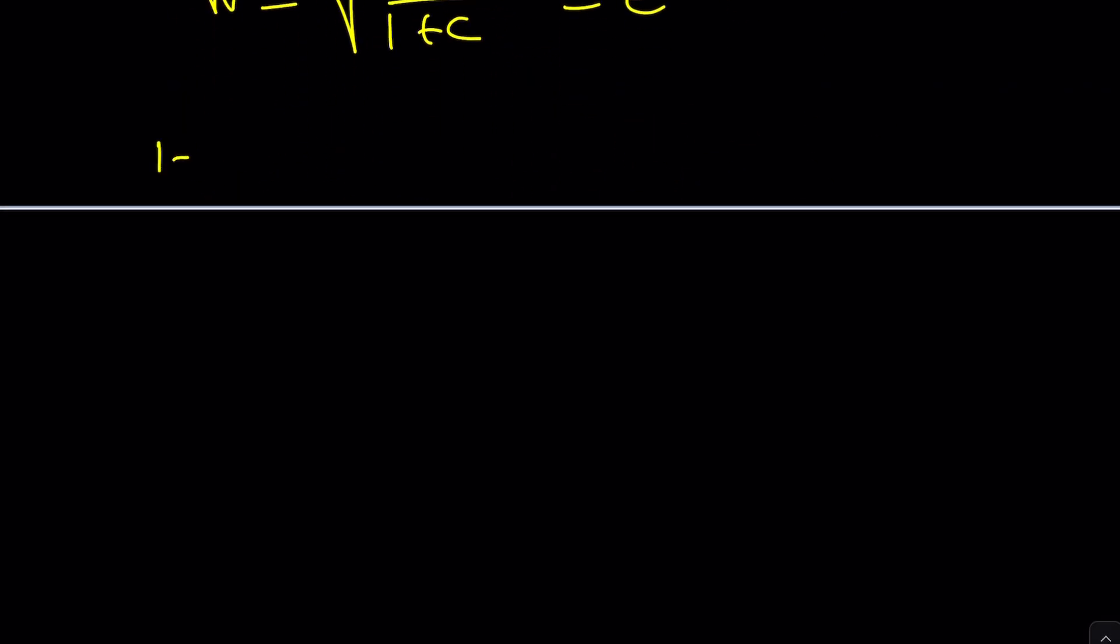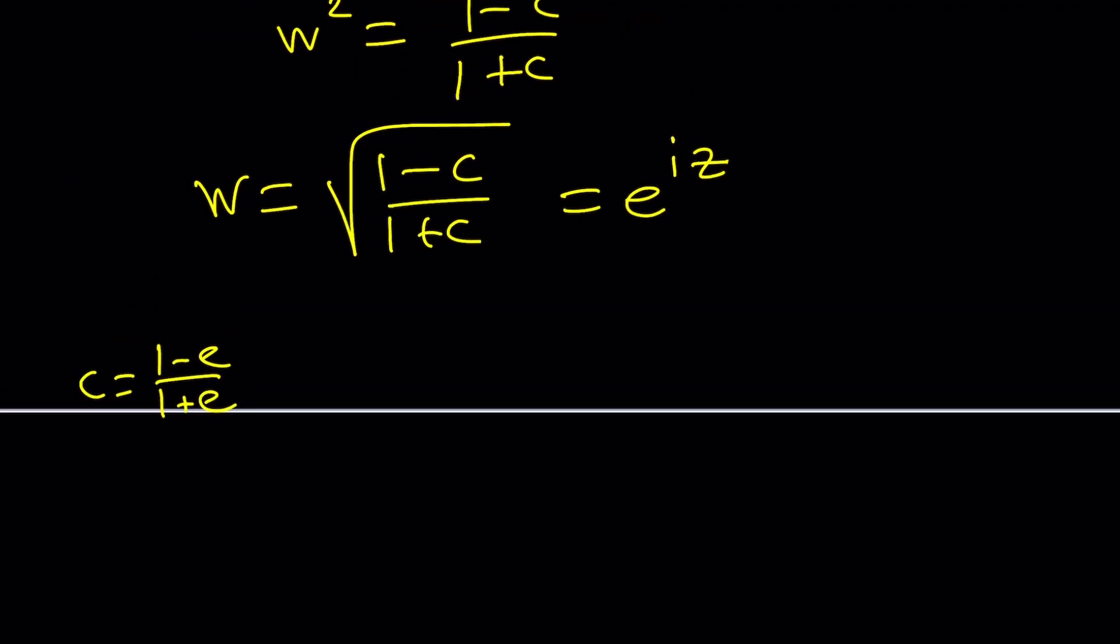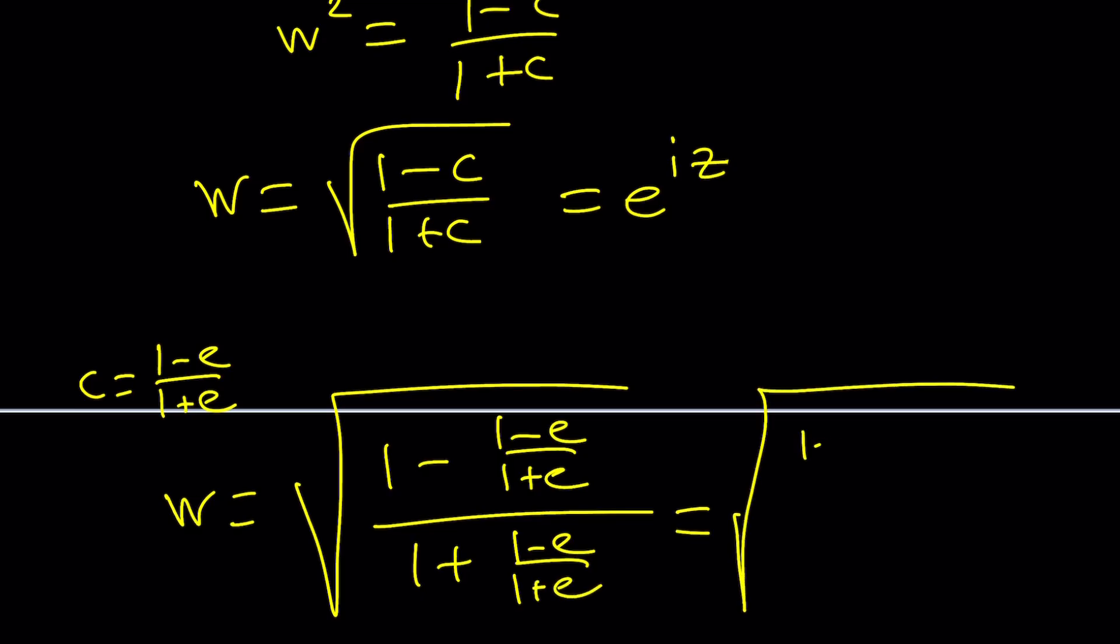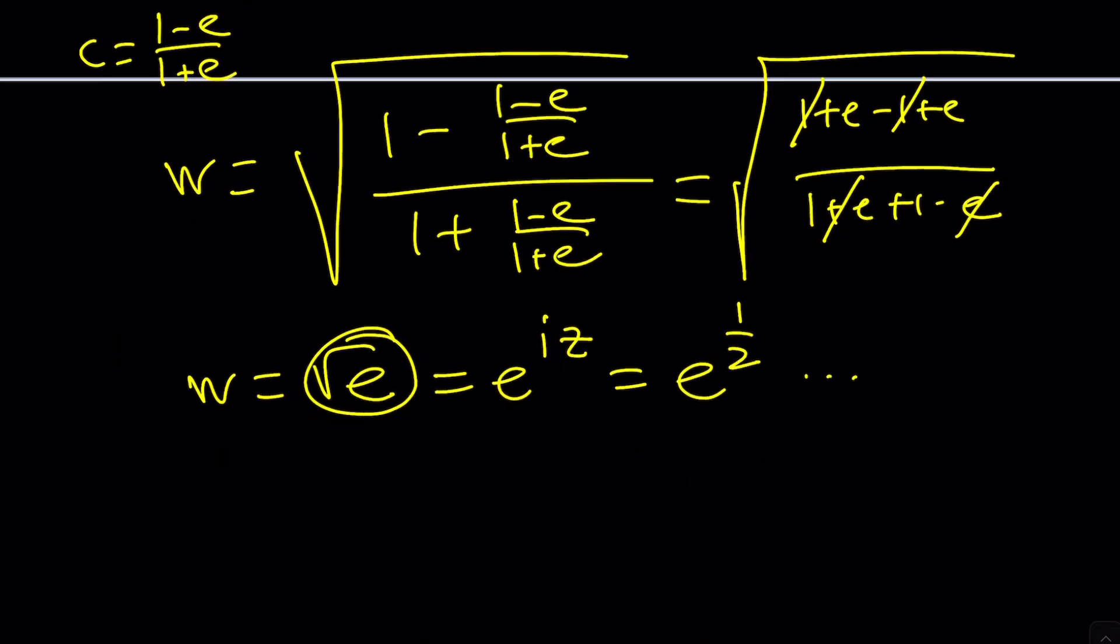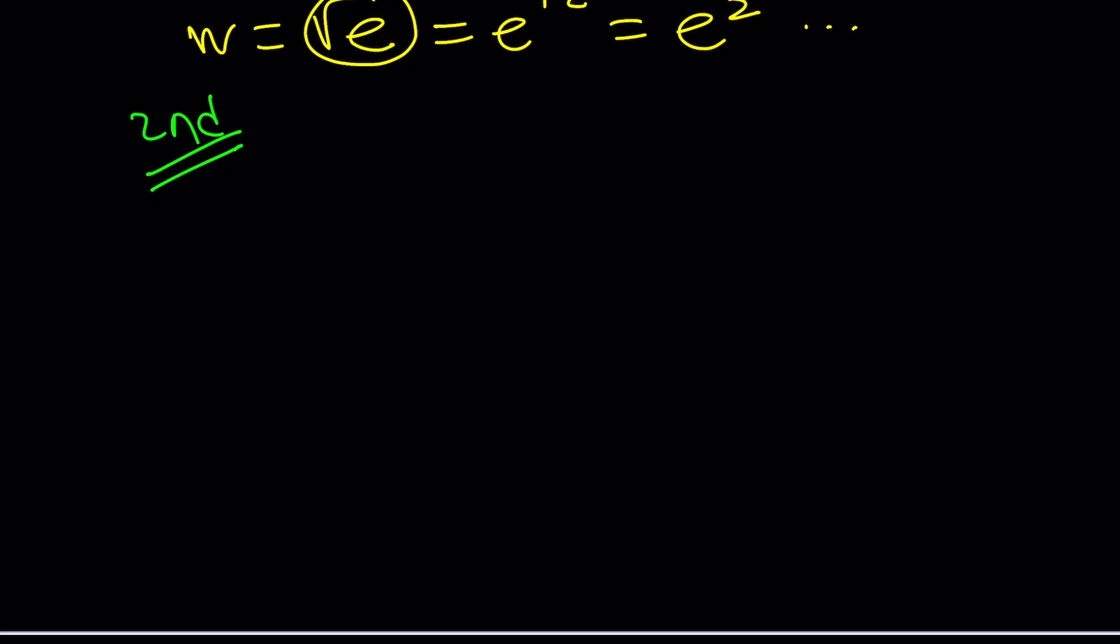What would happen if I replace c with 1 minus e over 1 plus e? W would be the square root of 1 minus c, which is 1 minus e over 1 plus e. Let's simplify this as much as possible. 1 plus e minus 1 plus e with the negation. 1 plus e plus 1 minus e. Here the 1s cancel out. Here the e's cancel out. We end up with 2e divided by 2. And then that'll give us an e. So w would be the square root of e. It's beautiful because now I can set it equal to this and write this as e^(1/2). I'm going to leave the rest to you because I'm going to show you another way to approach it.